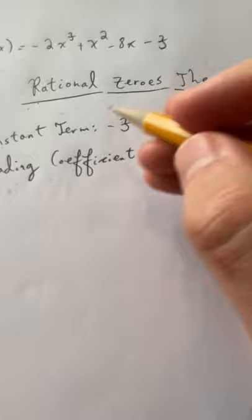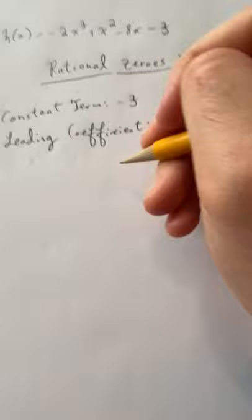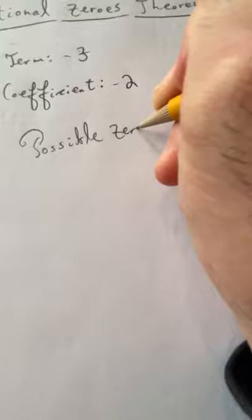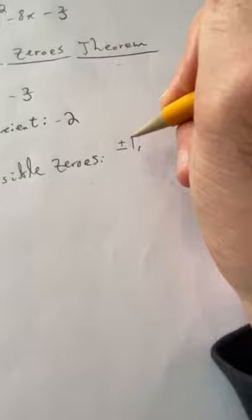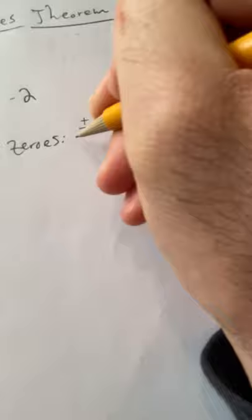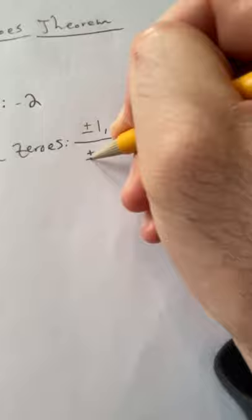The possible zeros come from fractions of the constant term on top and the leading coefficient on the bottom. So we look at the factors of negative 3: plus or minus 1 and plus or minus 3. And for the leading coefficient, it's either plus or minus 1 or plus or minus 2.